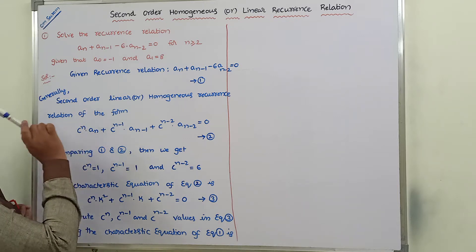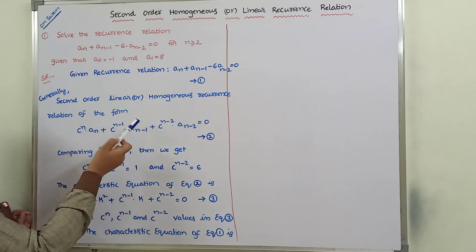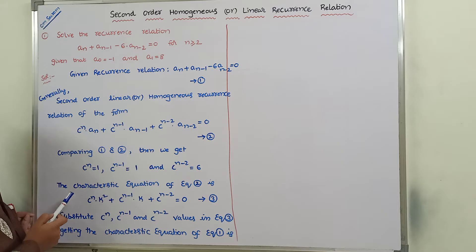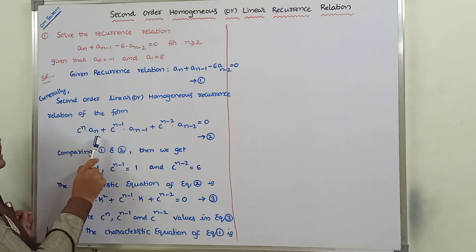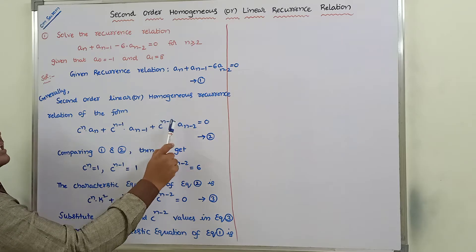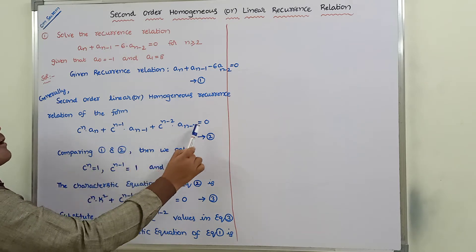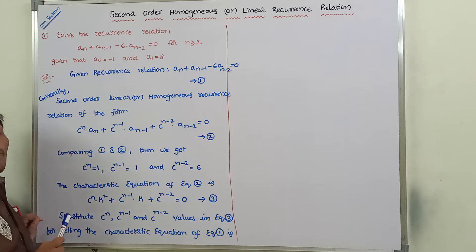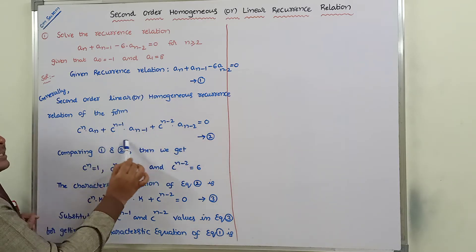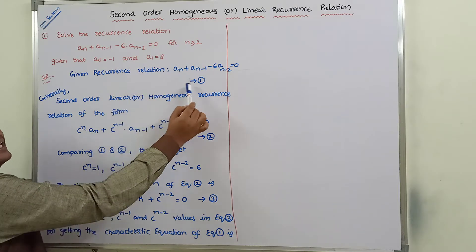Generally, the second order homogeneous recurrence relation is in this form. In the previous video, we have already discussed about the second order homogeneous recurrence relation. The general form is: c_n·a_n + c_(n-1)·a_(n-1) + c_(n-2)·a_(n-2) = 0. Now, comparing this general form with the given recurrence relation.